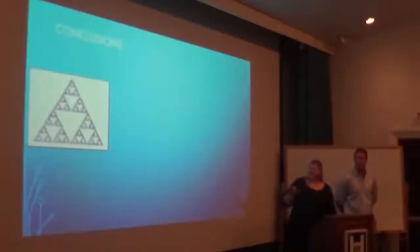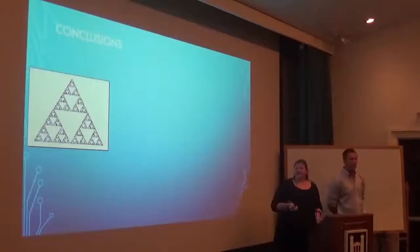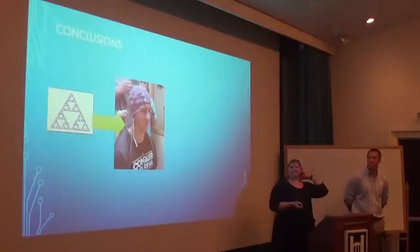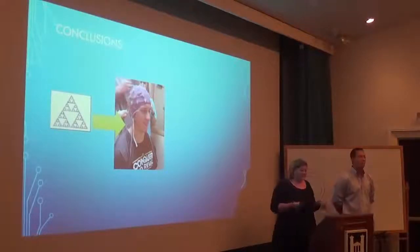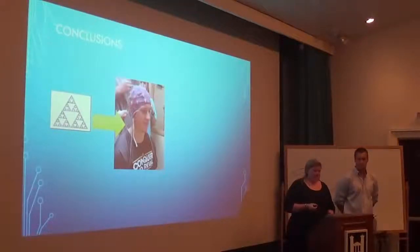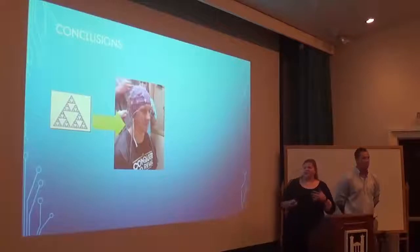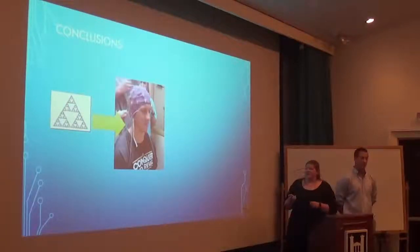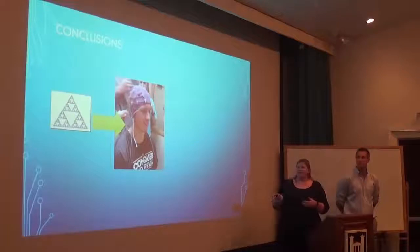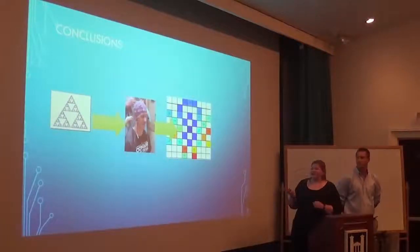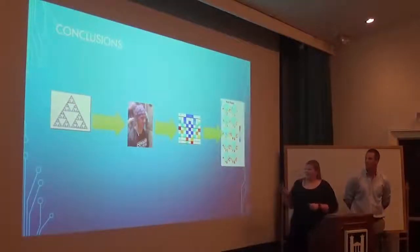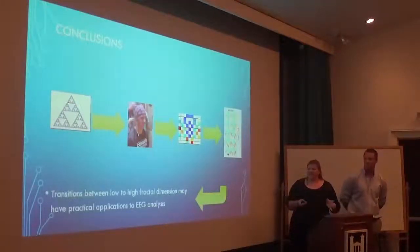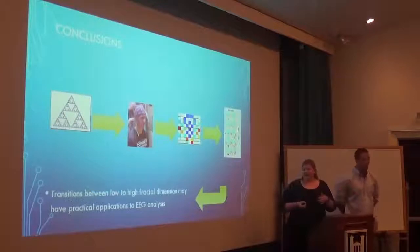We learned that there are more than the three dimensions commonly known about — these are called fractal dimensions, which is how nature naturally organizes itself through chaos. This relates to real-life examples like EEG data, where we can create maps of fractal dimensions and see trends. This leads us to the conclusion that the transition between low and high fractal dimension may have practical applications in EEG analysis.